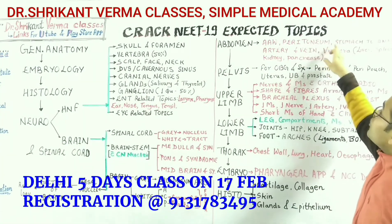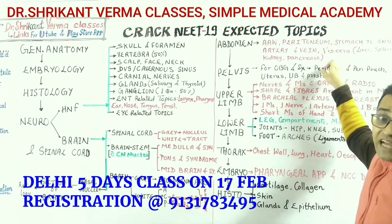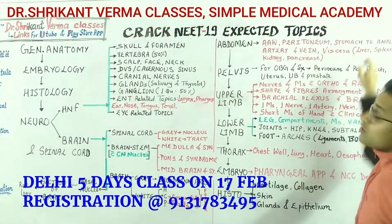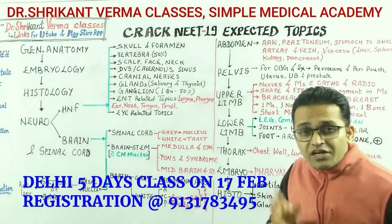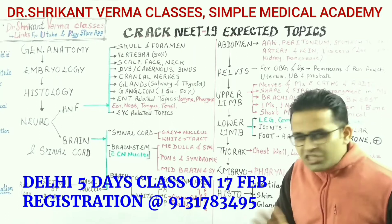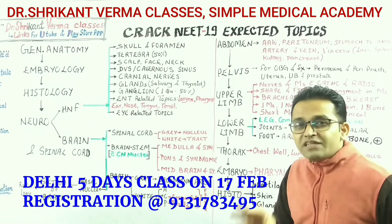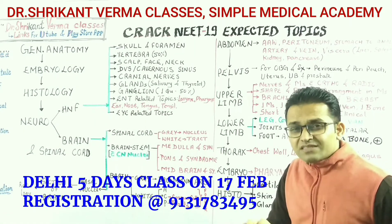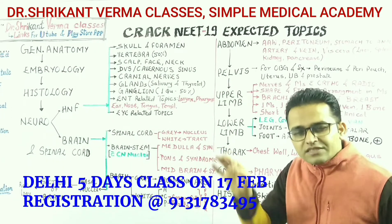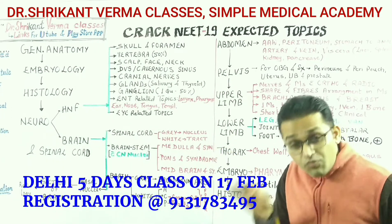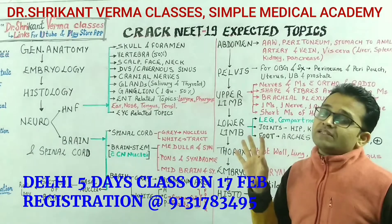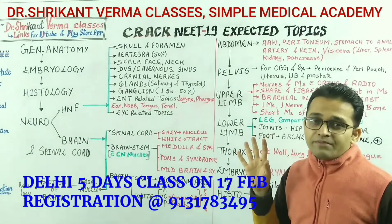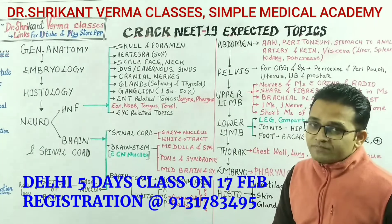After the peritoneum, study the GIT part — from the stomach to the anal canal. Study the stomach, then duodenum, jejunum and ileum. Then study the cecum and appendix, ascending colon, transverse colon, descending colon, sigmoid colon, rectum and anal canal. These are important for surgical purposes.